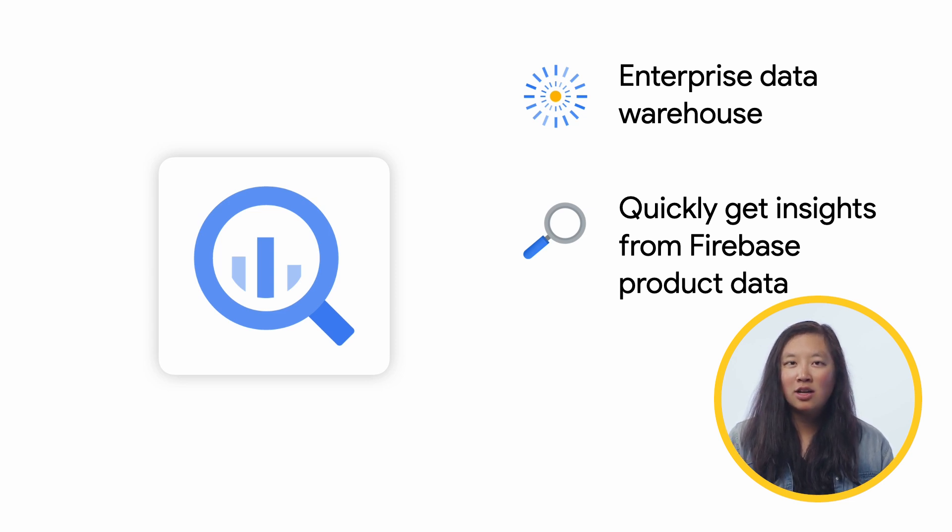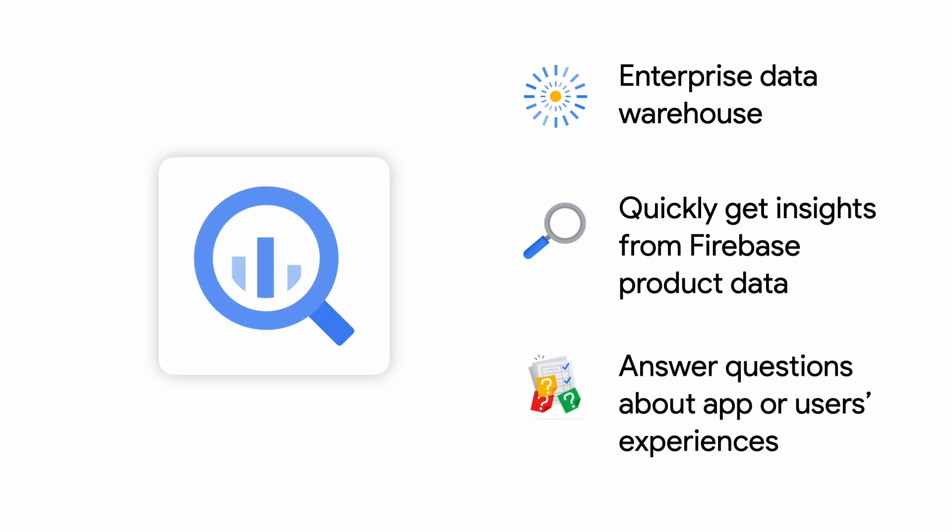In Firebase, there is a lot of data across a lot of the products. And sometimes, you might have some questions about your app or your users' experiences that can be answered by looking more closely at this data. Maybe you're using Google Analytics and want to see the retention rate by country, or maybe you want to check Crashlytics to look at the number of crashes per day for the past month to ensure a bug bash you just had made your app more stable over time. All of these questions can be answered by integrating Firebase with BigQuery, where you can perform custom analysis on your data set per product.